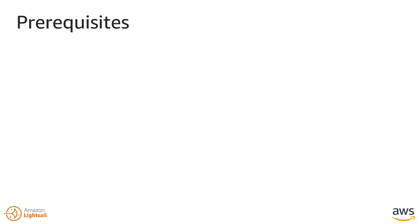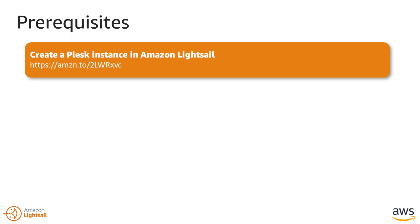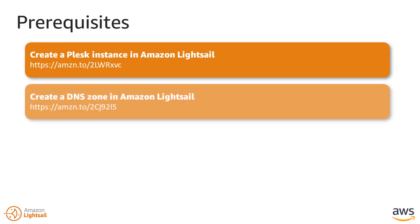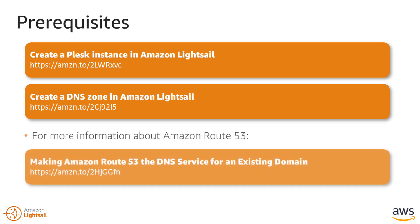Before you can start using Plesk, there are a few things you need to do first. Create a Plesk instance in LightSail, and create DNS zones in LightSail for the domains that you will administer in Plesk. Browse to the addresses shown on the screen if you need information about how to set up these prerequisites. Keep in mind that LightSail can host the DNS for up to three domains. If you need to add more domains, then we recommend using Amazon Route 53. For more information, browse to the address shown on the screen in the Route 53 documentation.